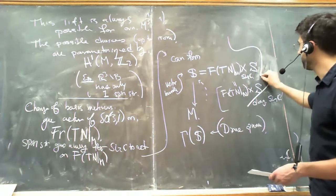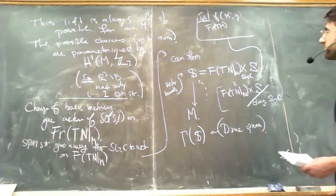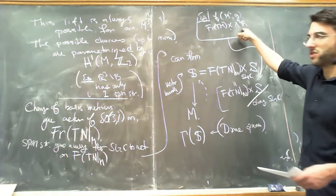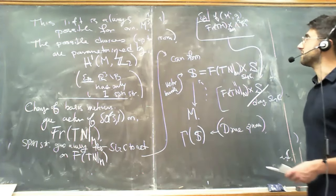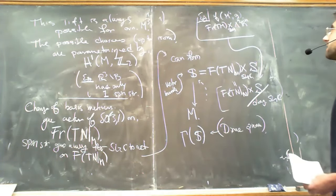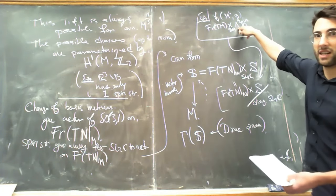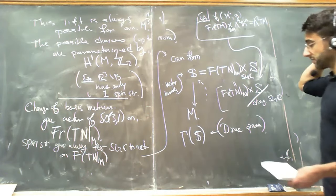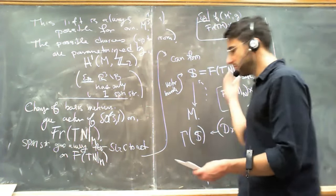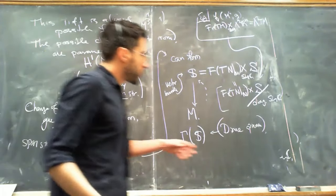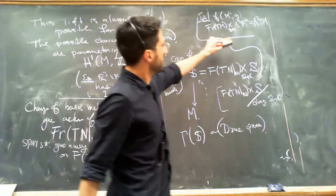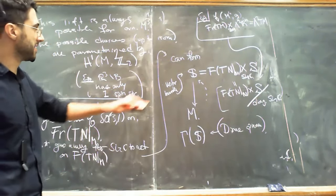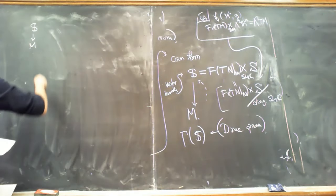There are other types of spinors: if you replace S with some other representation of SL(2,C), you get a different notion of spinors. By the way, all of our favorite bundles can be interpreted as constructions like this. For example, with the representation Λ²(Rⁿ), and SO(n) acting on both frames and on Rⁿ (hence on Λ²(Rⁿ)), this gives nothing but the second exterior power of the tangent bundle.